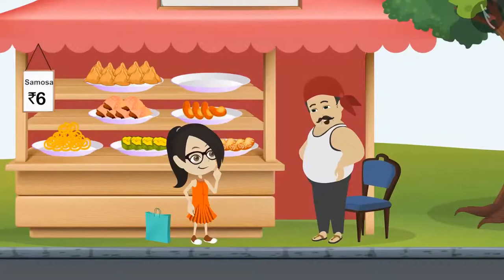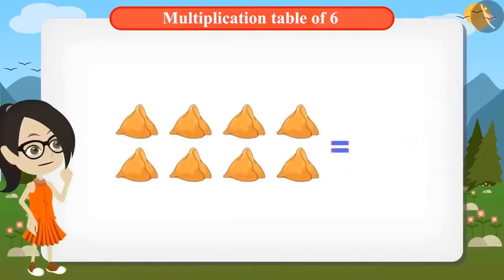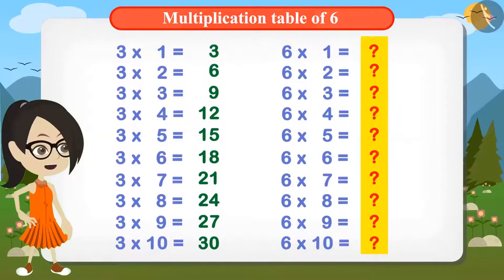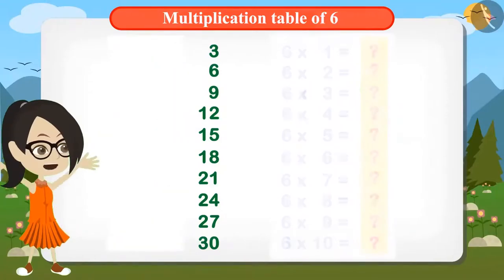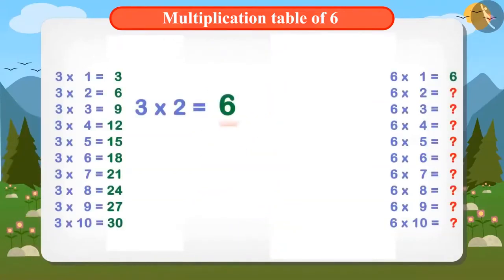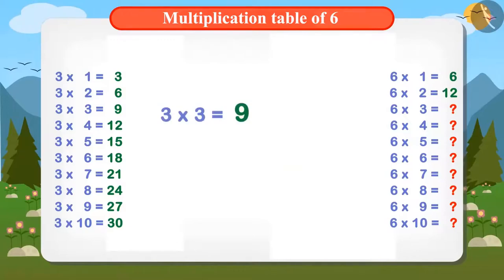By this method, you find out the table of 6 and calculate the amount to be paid for 8 samosas. Wow, Chagu Uncle! This method is very good! Now I will find out the cost of 8 samosas. To find the multiplication table of 6, multiply 2 with the answer of the multiplication table of 3. 3×2 is 6, so 6×2 will be 12. This is very easy. 3×3 is 9, so 6×3 will be 9×2, that is 18. Now I can find out the table of 6 in this manner.